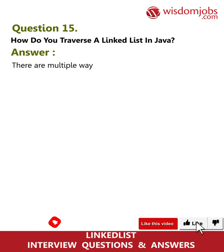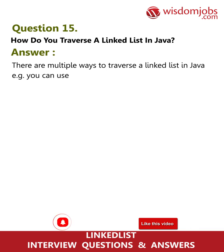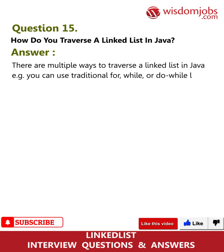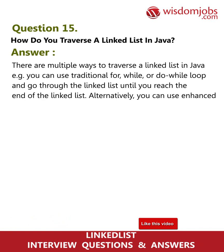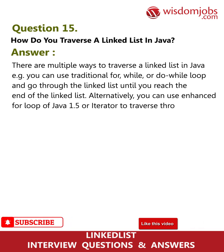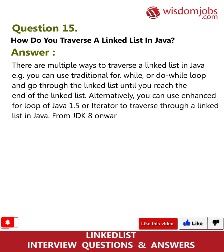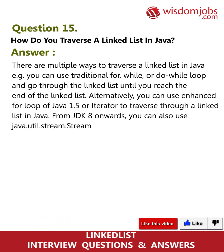Question 15: How do you traverse a linked list in Java? There are multiple ways. You can use a traditional for, while, or do-while loop and iterate until you reach the end. Alternatively, you can use the enhanced for loop from Java 1.5 or an iterator. From JDK 8 onwards, you can also use Java streams to traverse a linked list.